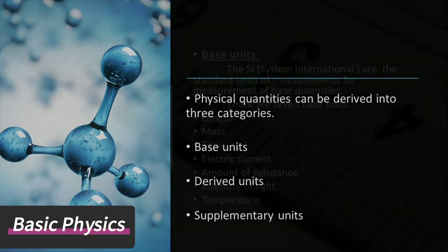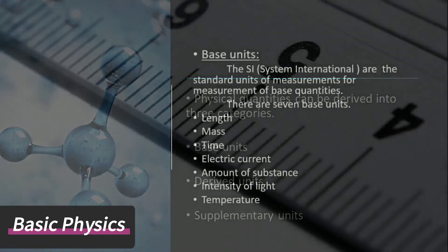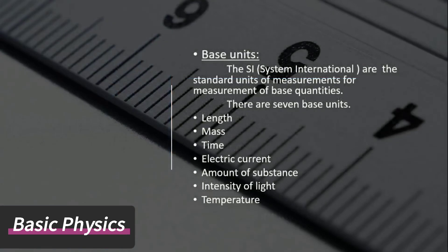The SI system international are the standard units of measurements for measurement of base quantities. There are seven base units: length, mass, time, electric current, amount of substance, intensity of light, and temperature.